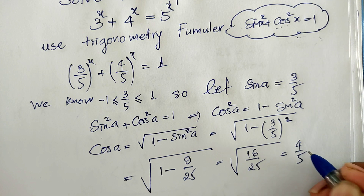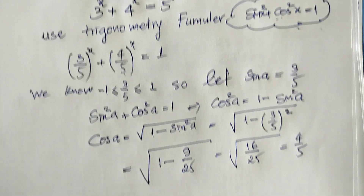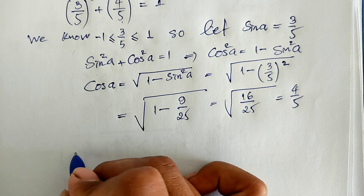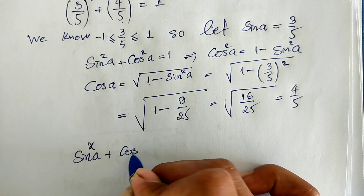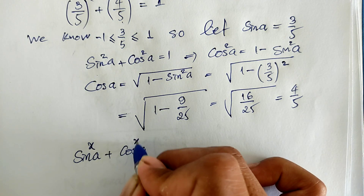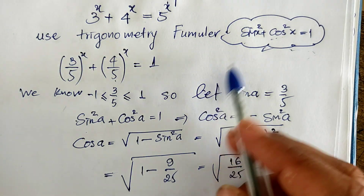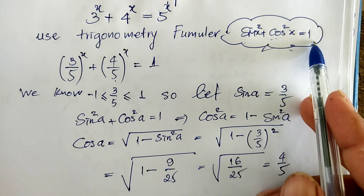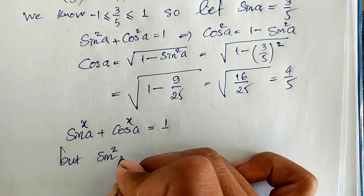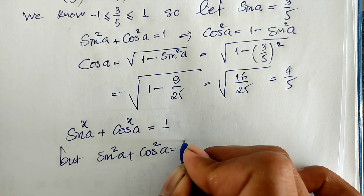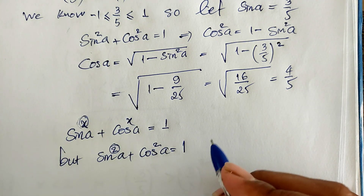And that equals 4 divided by 5. This is the same as 4/5. So now we replace it back in the equation. We get sine of a to the power h plus cosine of a to the power h is equal to 1. And we know this equation — sine squared of a plus cosine squared of a equals 1.